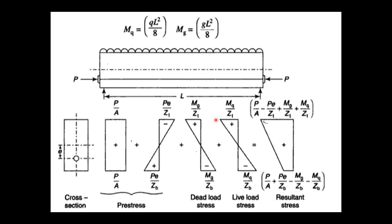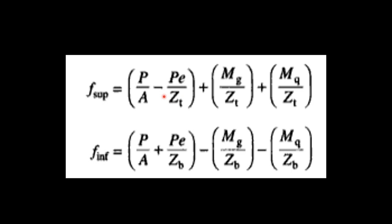Mg = WL²/8; divided by the section modulus gives the bending stress. Adding all terms with sign conventions gives two formulae: f_top = P/A − P·e/Z_t + M_G/Z_t + M_Q/Z_t, where the first two terms are pre-stress, the third is dead load, and the last is live load. f_bottom = P/A + P·e/Z_b − M_G/Z_b − M_Q/Z_b.